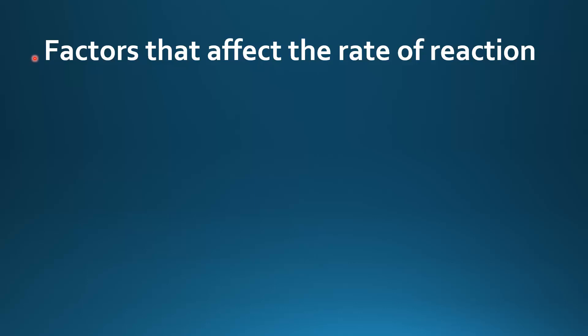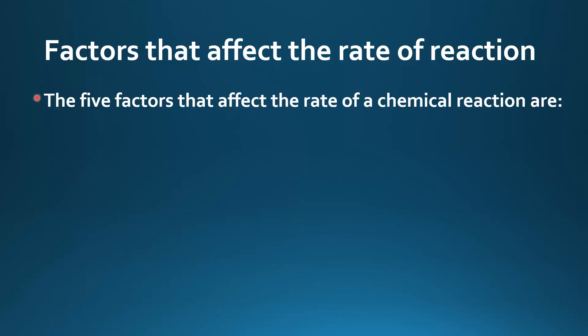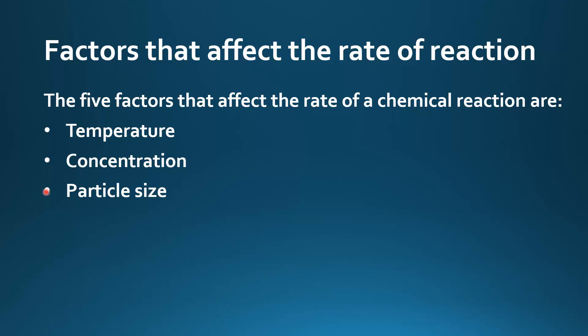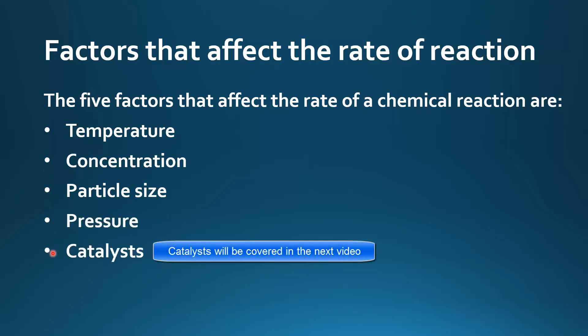Factors that affect the rate of reaction. The five factors that affect the rate of a chemical reaction are temperature, concentration, particle size, pressure, and the use of a catalyst.